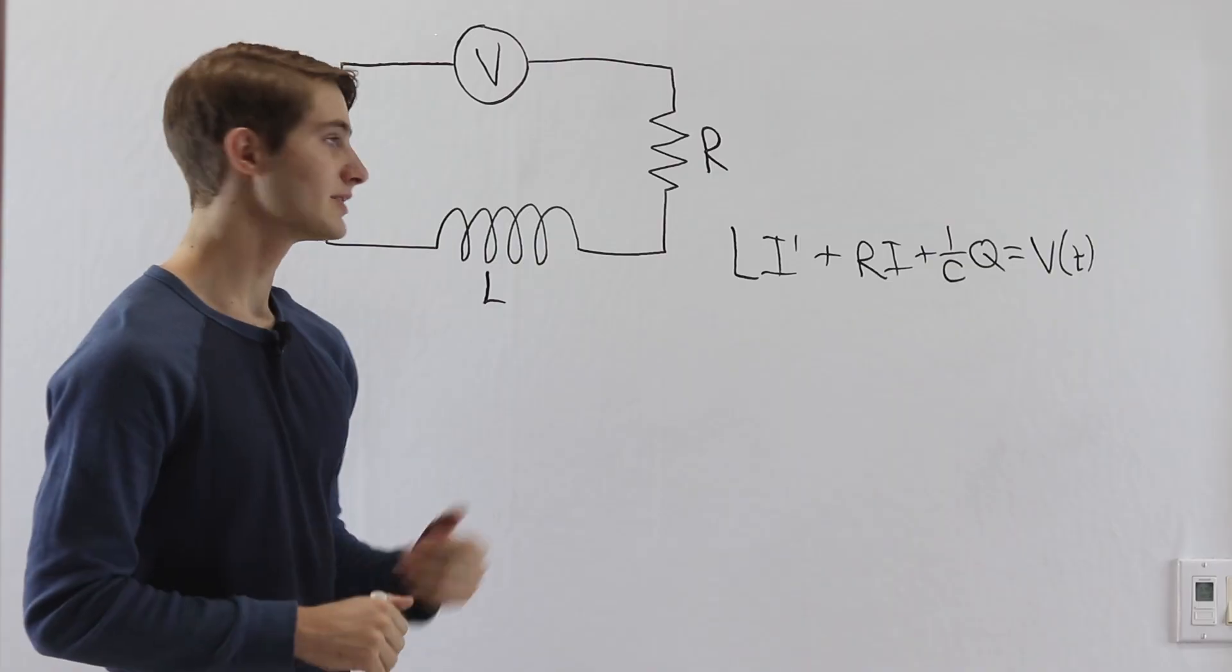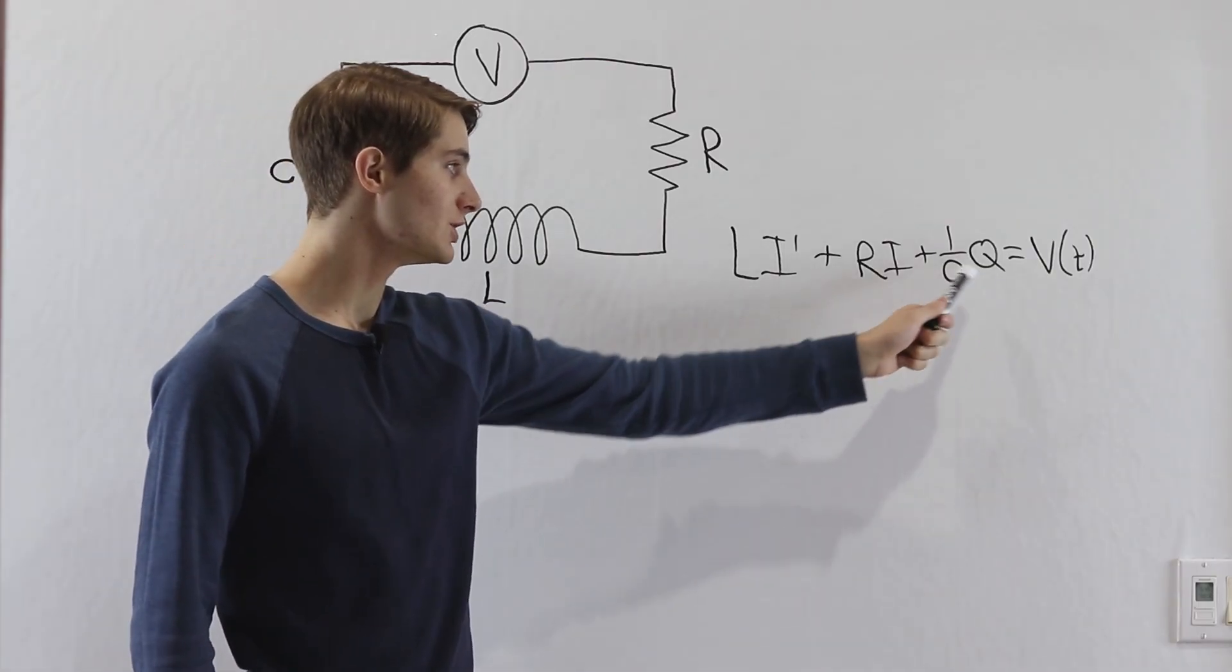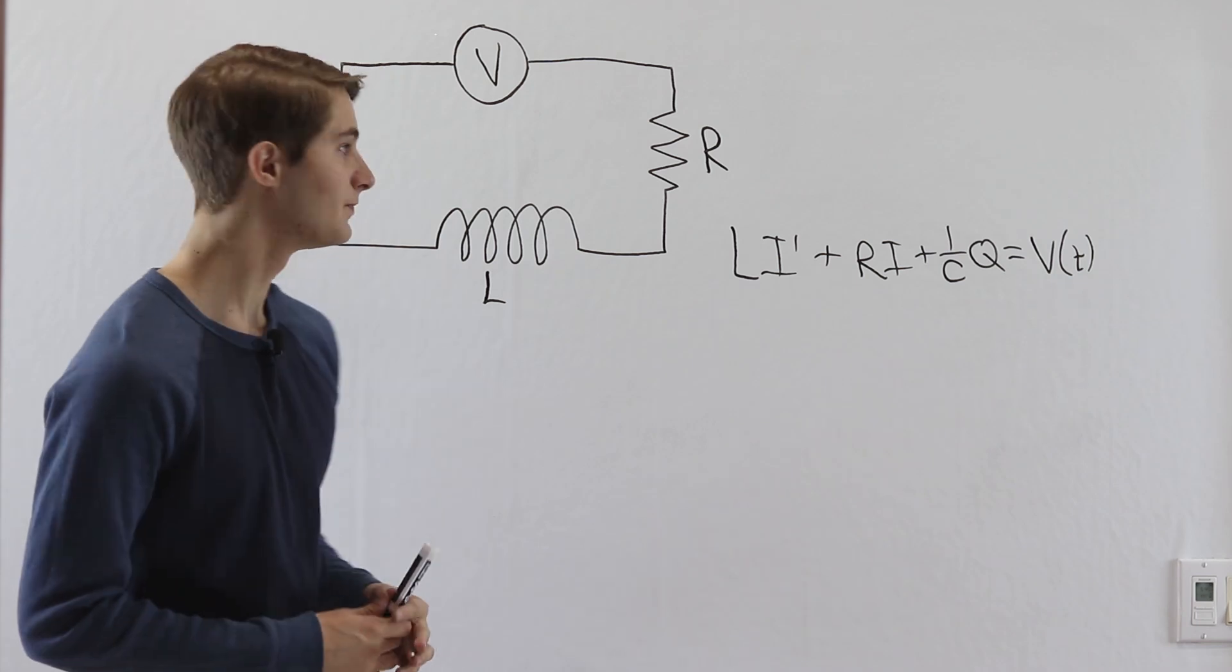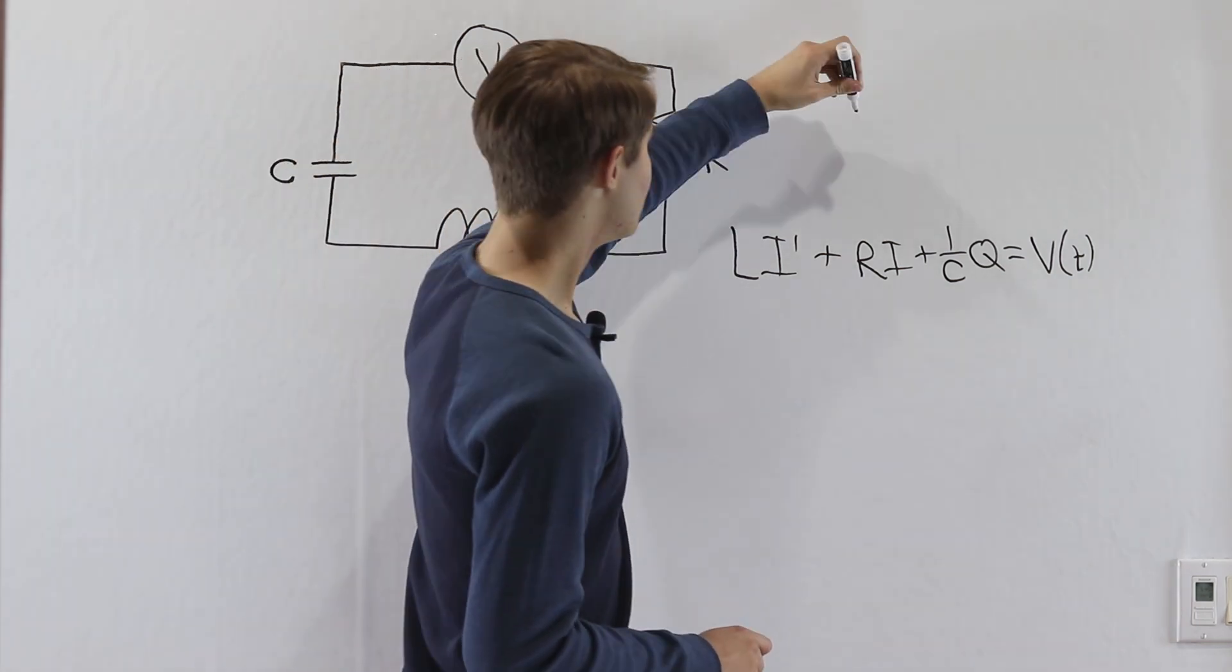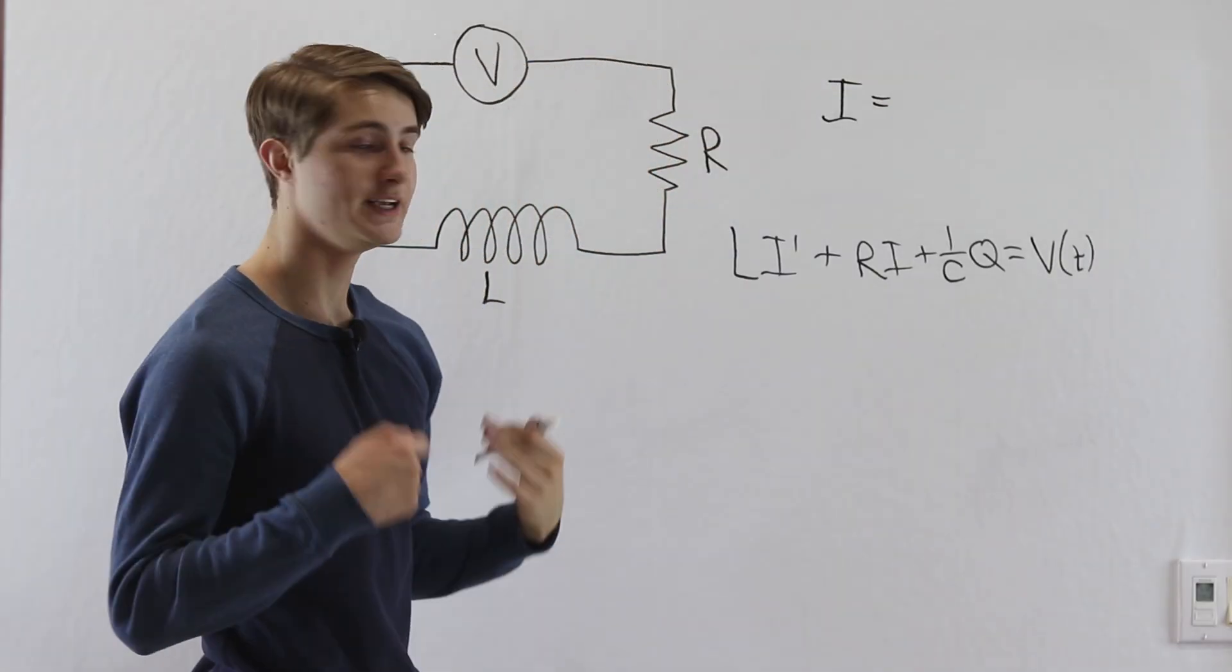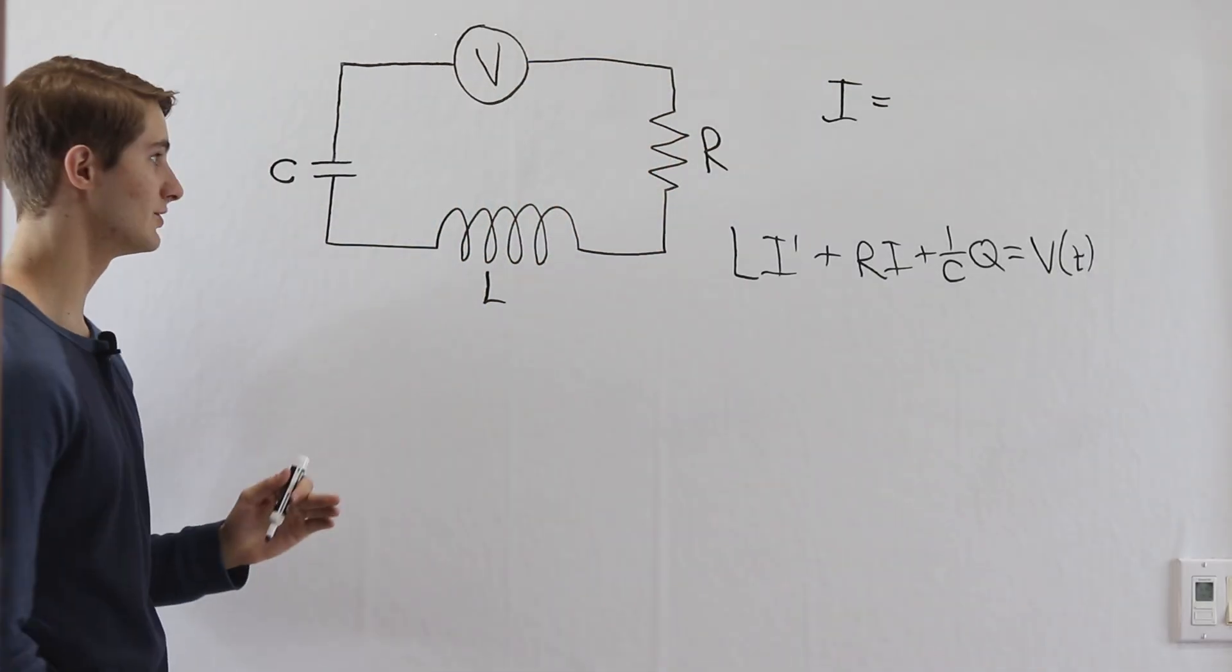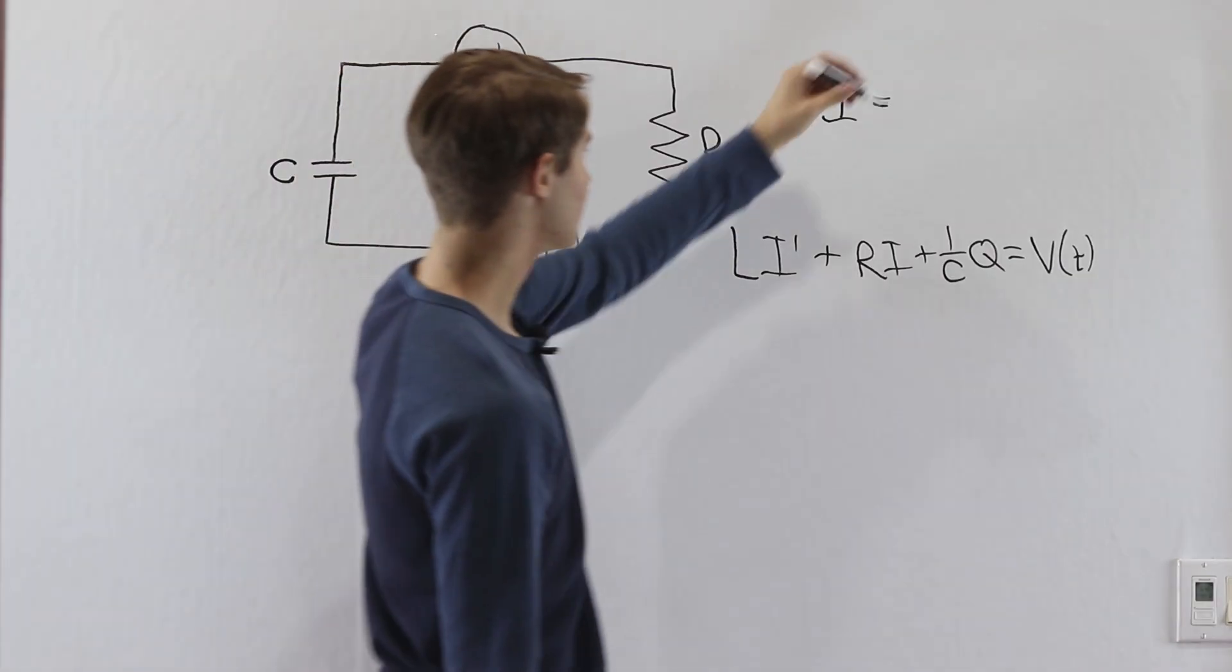The important thing that lets us solve this differential equation is by recognizing the relationship between current and charge. When we're looking at a circuit like this, remember that the current is actually the rate of change of charge on this capacitor. The more current goes through this circuit, the more this capacitor is going to get charged up.